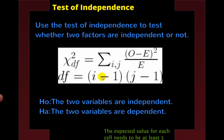The degrees of freedom are calculated by subtracting 1 from the number of rows and subtracting 1 from the number of columns, then multiplying them together. If they're independent, our null hypothesis is that the two variables are independent. The alternative is that they are not — that they are dependent, or not independent.